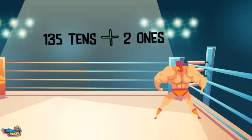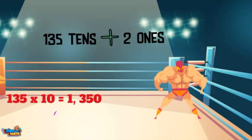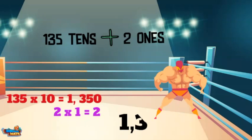Let me show you why this works. 135 tens is represented by 135 times 10. 2 ones is represented by 2 times 1. If we add these values together, we get the original value of 1,352.